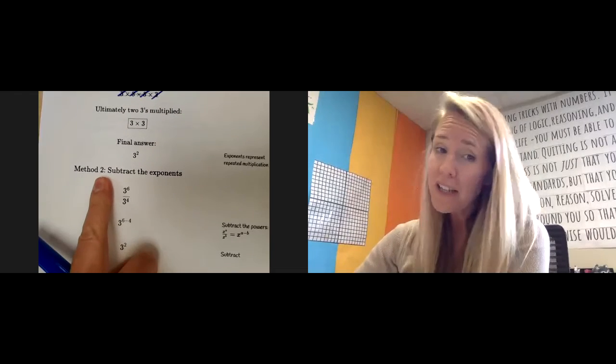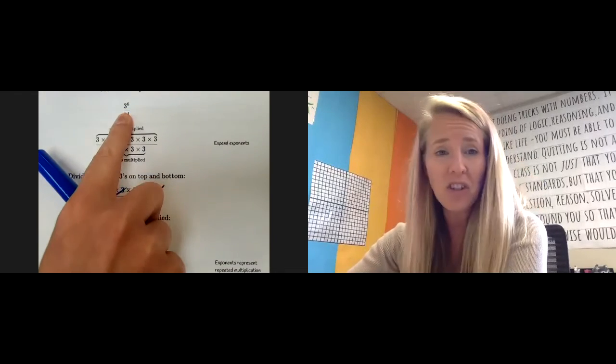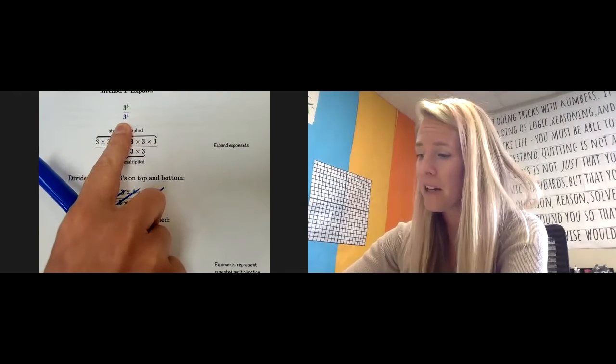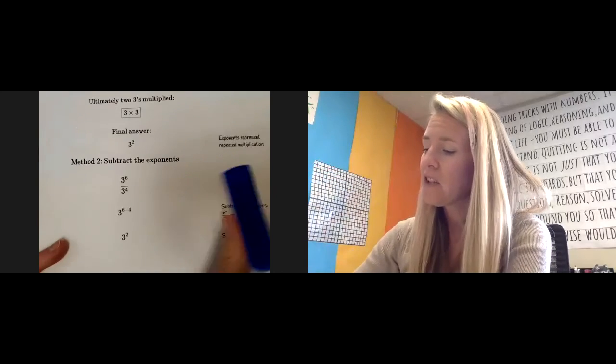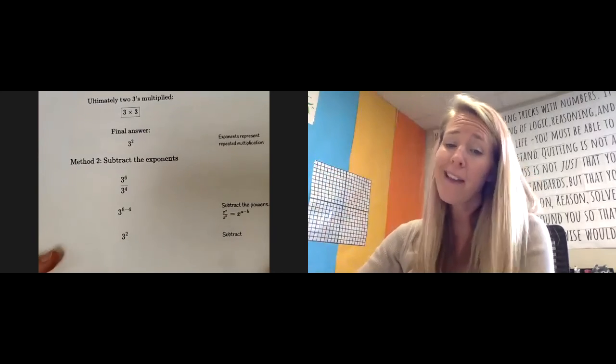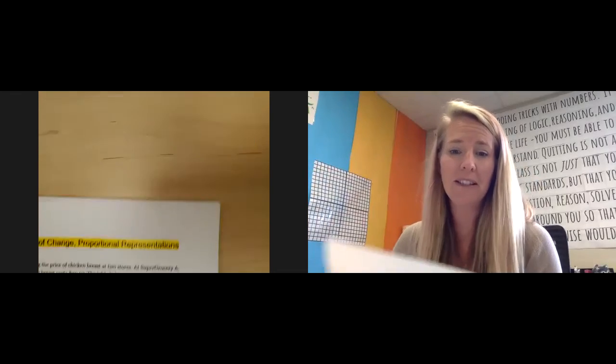Method two, shortcut is just subtract your exponents. If your base matches, if it's the same number on the top and the bottom, you can divide three by three, three by three and cancel those out. So the shortcut's just to subtract them. And that's it. Those are the three basic rules of exponents.